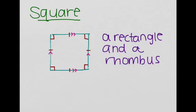Now we're going to look at a hybrid, and that hybrid is the square. The square is a rectangle and a rhombus combined. So it has right angles as all of its angles, and all of its sides are congruent. This side is parallel to this side, and this side is parallel to this side. So the square is a really special type of parallelogram — it's a cross between a rectangle and a rhombus.